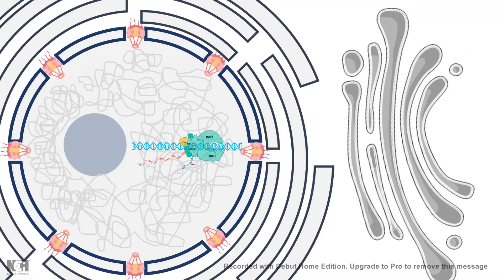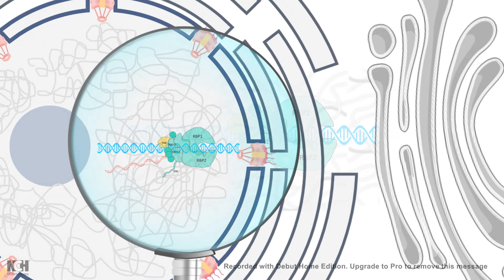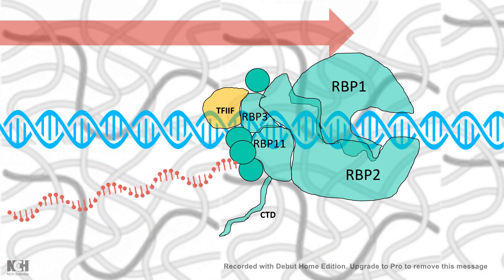In eukaryotes, transcription takes place inside the nucleus. The eukaryotic RNA polymerase moves along in a 5' to 3' direction along DNA, and using a template strand, it transcribes the mRNA.